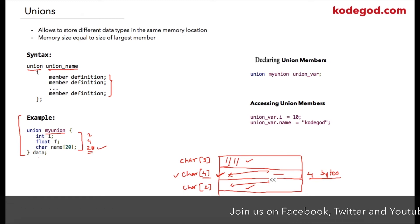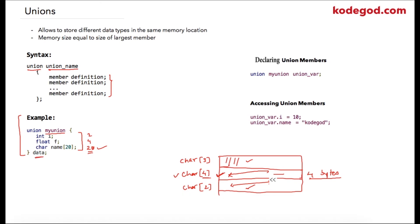Similar to structures, you can declare your variable of union just before the semicolon, or alternatively you can declare your variables by writing keyword union, after that the name of your union, and then your variable name. Suppose I declare a union variable as union_var, then we can access union members like this.